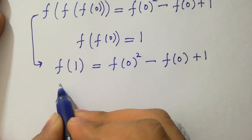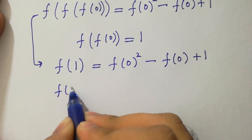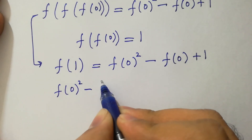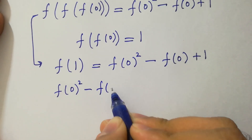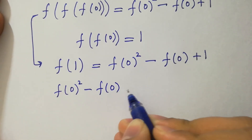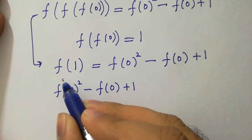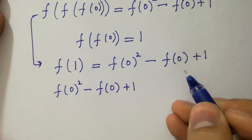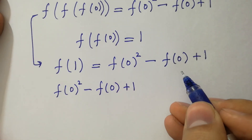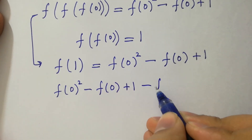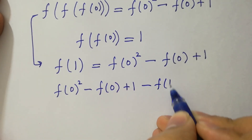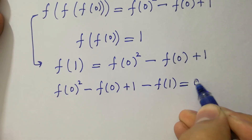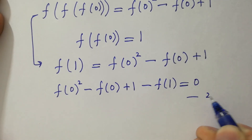So we get f of 0 squared minus f of 0 plus 1 minus f of 1 equals 0. This is the second equation.